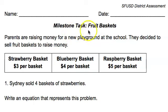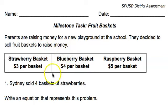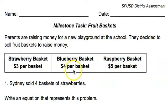This task is called Fruit Baskets. Parents are raising money for a new playground at the school. They decided to sell fruit baskets to raise money. A strawberry basket is $3 per basket, a blueberry basket is $4 per basket, and a raspberry basket is $5 per basket. You're going to use this information to solve some problems involving multiplication.